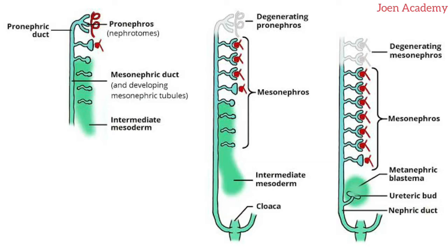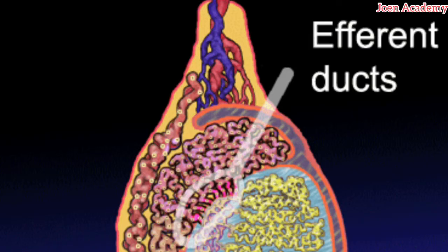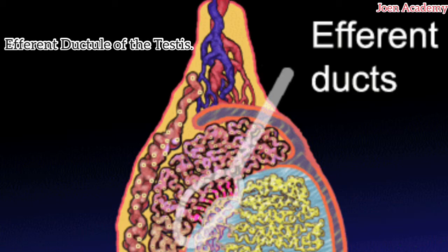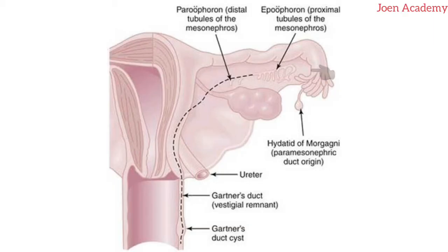Towards the end of the embryonic period, a greater part of the mesonephros tubules degenerate, while some tubules persist. The ones that persist are modified and take part in forming the duct system of the testis in males, which we can also term the efferent ductules of the testis. In females, the mesonephros tubules form the epoophoron, which is also known as the organ of Rosenmuller, or the paroophoron and the paraophoron.